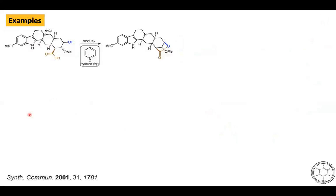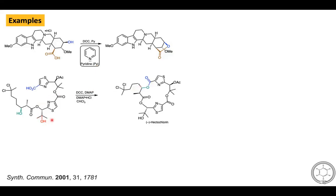Now we will look at some examples of Heck macrolactonization. As mentioned, some reactions require DMAP hydrochloride while others do not. In one reaction, DCC and pyridine conditions provide the corresponding lactone product. In another example for Heck macrolactonization, DCC, DMAP, and DMAP hydrochloride conditions are used to prepare a natural product.